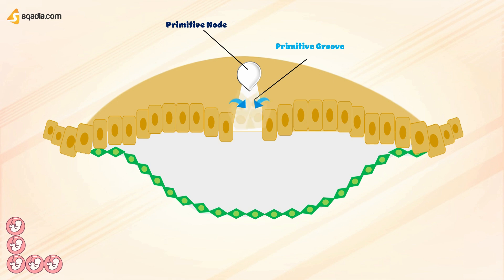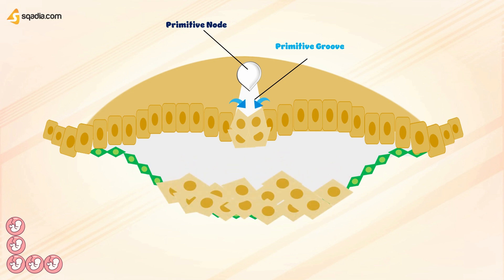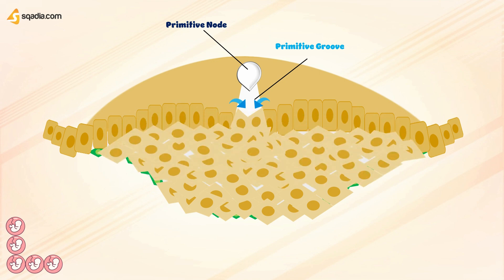Epiblast cells migrate across the disc through the primitive groove and into the space above the hypoblast. Three germ layers are produced. Once the cells have invaginated, some displace the hypoblast, creating the embryonic endoderm. Others come to lie between the epiblast and newly created endoderm to form mesoderm. Cells remaining in the epiblast then form ectoderm.